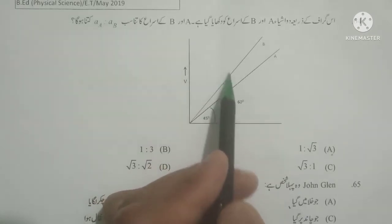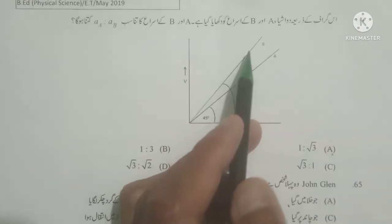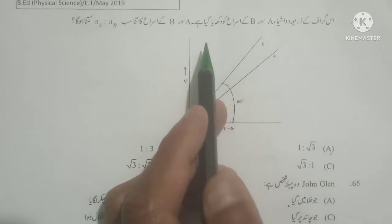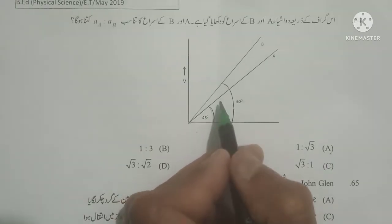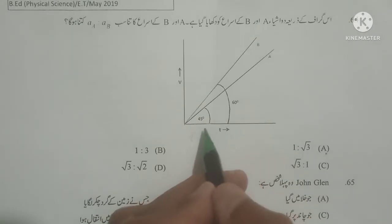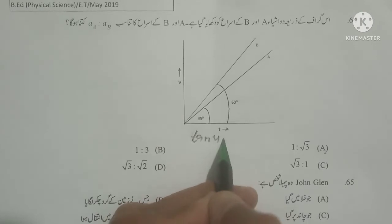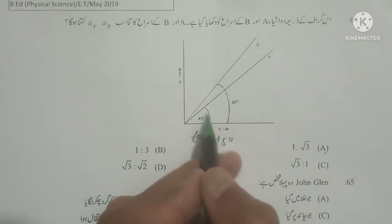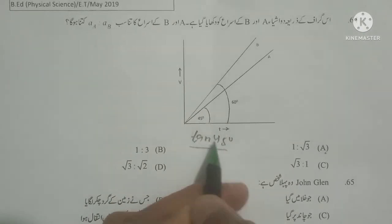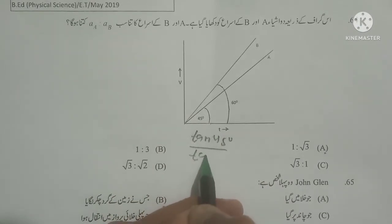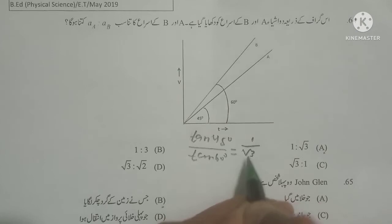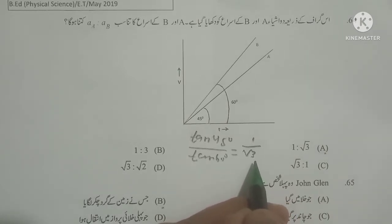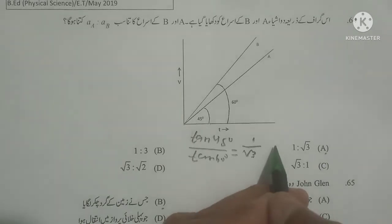Next question: In this graph, the acceleration of two objects A and B is shown — what is the ratio of acceleration of A to B? A velocity-time graph is given. The slope of a velocity-time graph gives acceleration. Angle for object A is 45 degrees and for object B is 60 degrees. Slope of A = tan 45° = 1, slope of B = tan 60° = √3. Therefore acceleration ratio A : B = 1 : √3. Option A is correct.